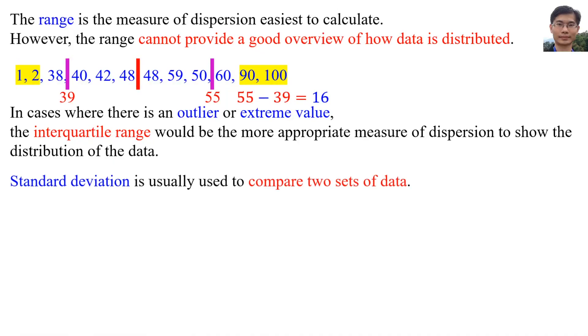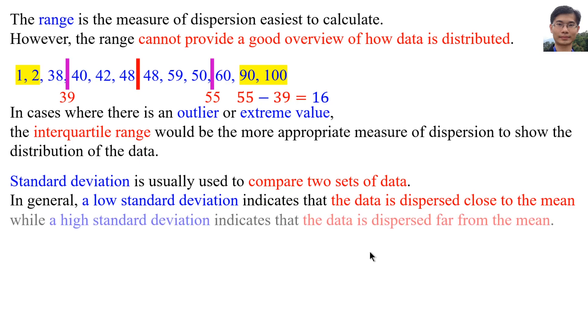Standard deviation is usually used to compare two sets of data. In general, a low standard deviation indicates that the data is dispersed close to the mean, while a high standard deviation indicates that the data is dispersed far from the mean.